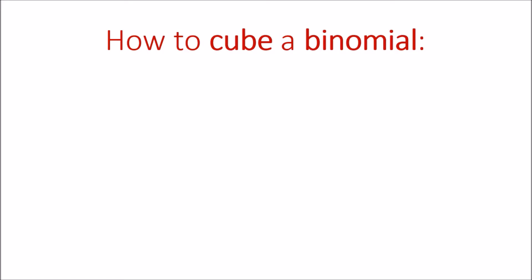In this video you'll learn step by step how to cube a binomial. In a previous video we looked at squaring a binomial — when you square a binomial you're taking a side length and multiplying it by the exact same side length to find the area of a perfect square. What we're going to be doing with cubing a binomial is taking things into the third dimension, finding not a surface area but actually a volume of a cube.